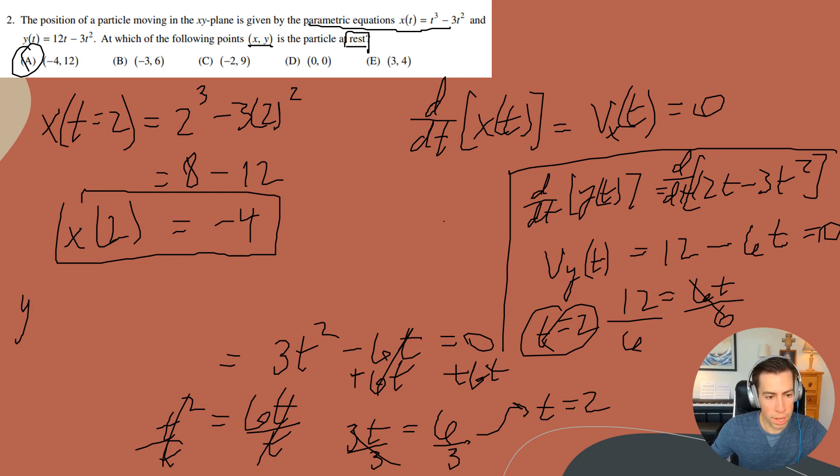Now I want y when t equals 2. So whenever I run that through, I'm going to get 12 multiplied by 2 minus 3 and then 2 squared. So when I do this, I'm going to have that y of 2 is equal to 24 minus 12. Therefore, y of 2 is going to be equal to 12.